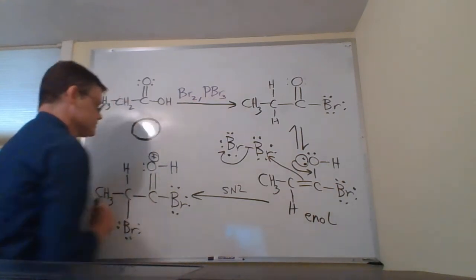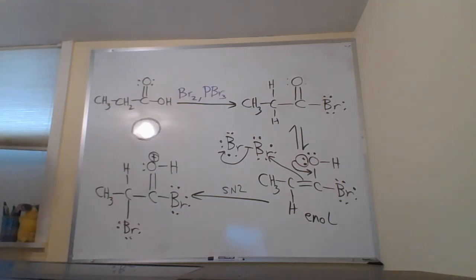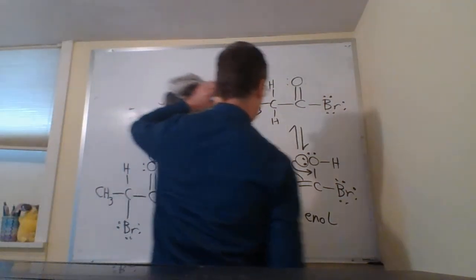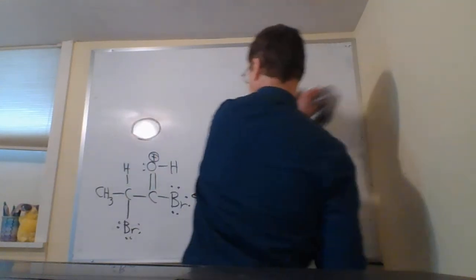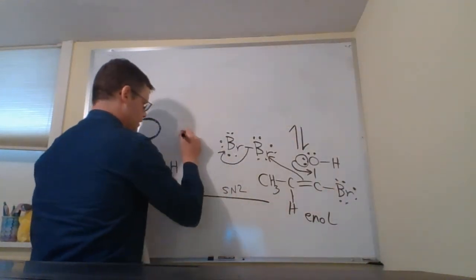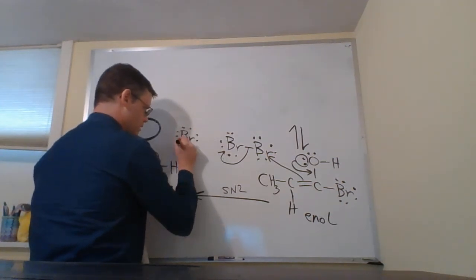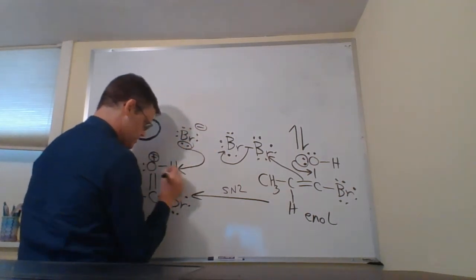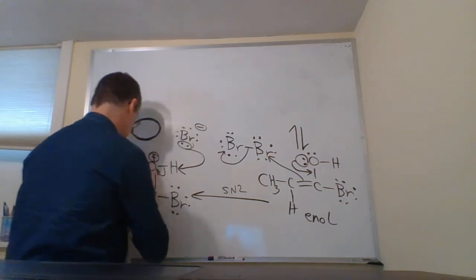So now we've got this oxonium ion with a plus charge on that oxygen. And then we're going to have a final step to get us to our product, and that is going to be this bromide ion pull off that hydrogen—do a deprotonation, a proton transfer.